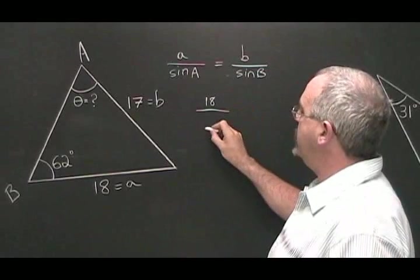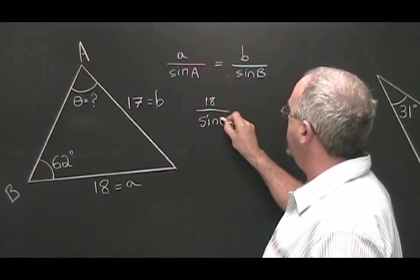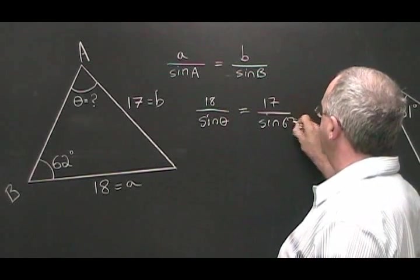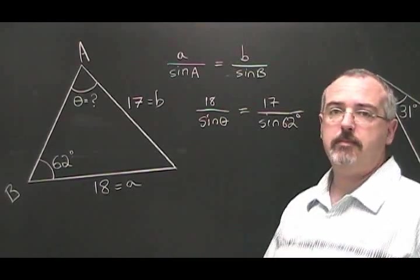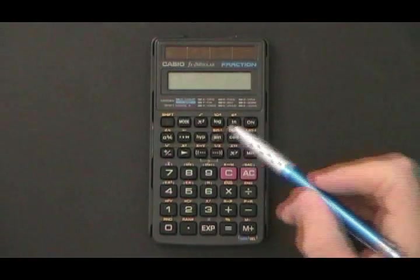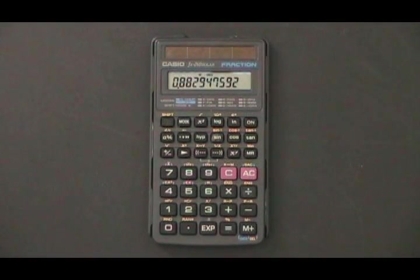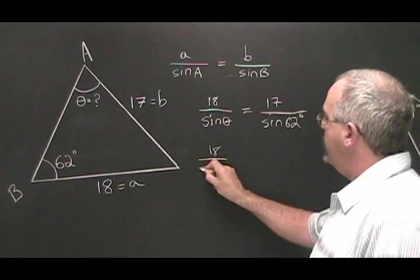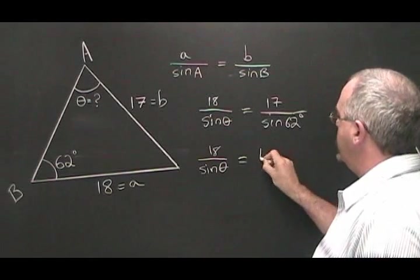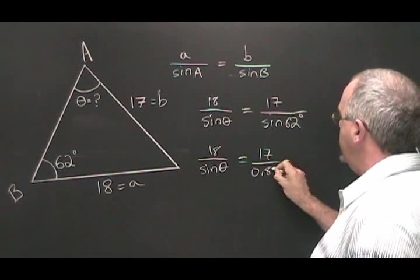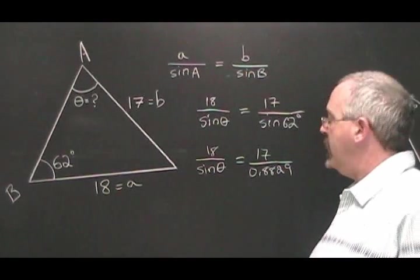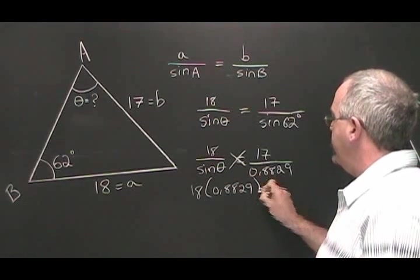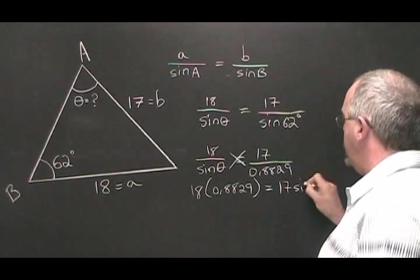18 over sine of unknown theta is equal to 17 over sine of 62 degrees. The sine of 62 degrees is equal to 0.8829. So we can rewrite our formula 18 over sine of theta is equal to 17 over 0.8829. Cross multiplying, 18 times 0.8829 is equal to 17 times sine theta.